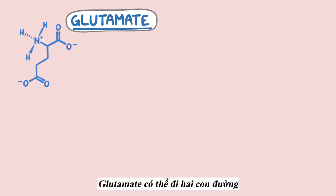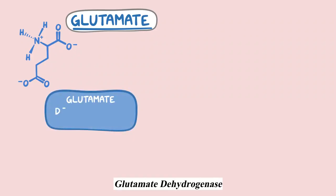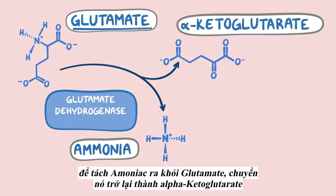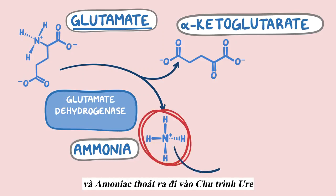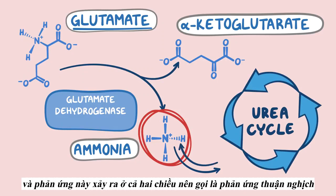From there, glutamate has two possible outcomes. The first is for it to encounter the same enzyme that incorporated ammonia into glutamate — glutamate dehydrogenase — and to have the ammonia snatched away from the glutamate, converting it back into alpha-ketoglutarate and a free ammonia that enters the urea cycle. Since this reaction can happen in both directions, we call it a reversible reaction.